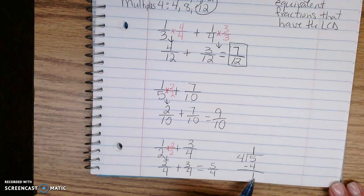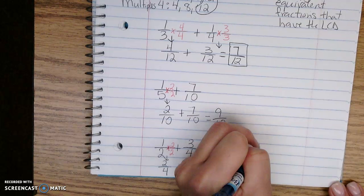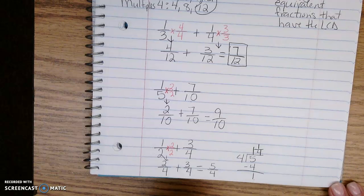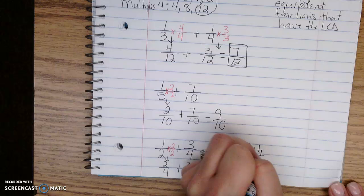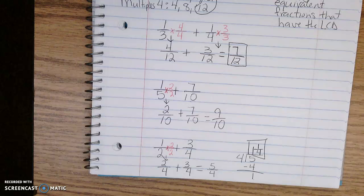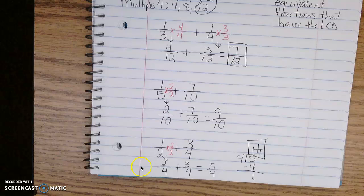My remainder becomes my numerator. My denominator comes from the outside. My final answer to this problem would be 1 and 1/4. So if I get an improper fraction, I do have to simplify that as well.